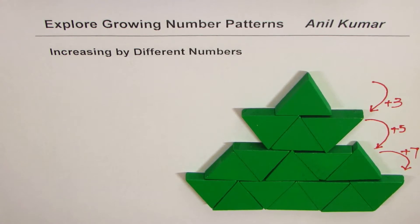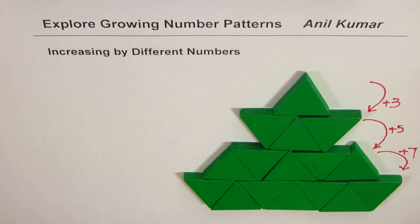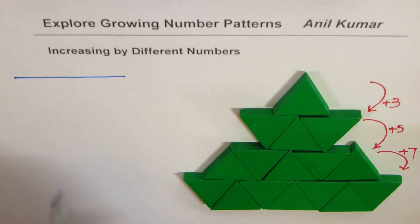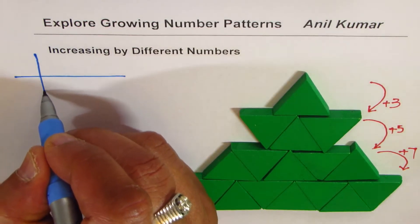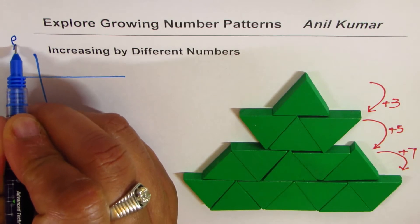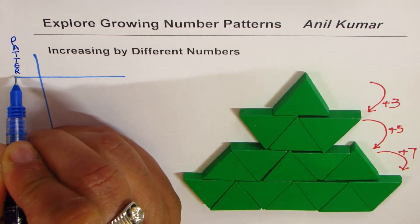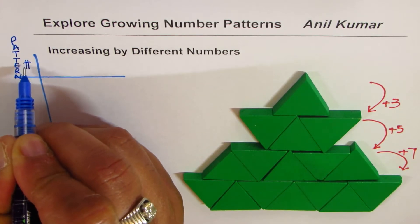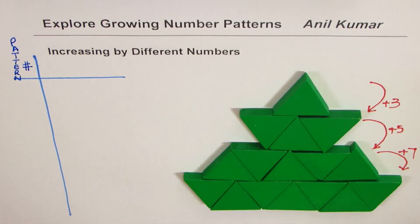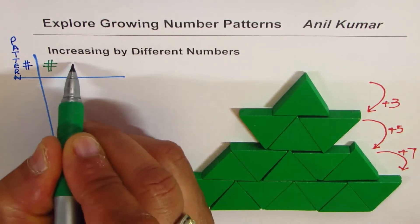Working with such patterns is very interesting. Now let us see how these numbers can be related. We'll make a table where in the first column we will write down the pattern number, and in the second column we will write down the number of triangles.